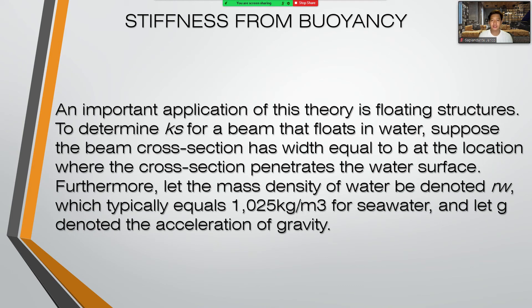The stiffness from buoyancy: an important application of this theory is floating structures. To determine stiffness for a beam that floats in water, suppose the beam cross-section has a width equal to the location where the cross-section penetrates the water's surface. Furthermore, let the mass density of the water be denoted — which typically equals that of water — and let g denote the acceleration of gravity.